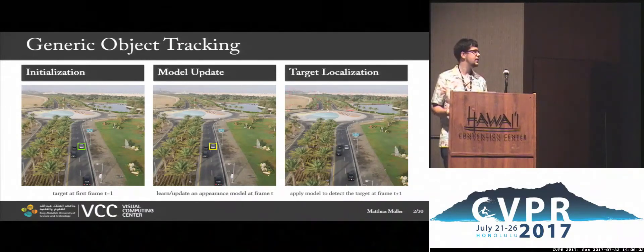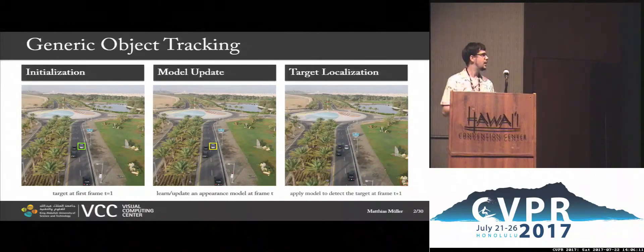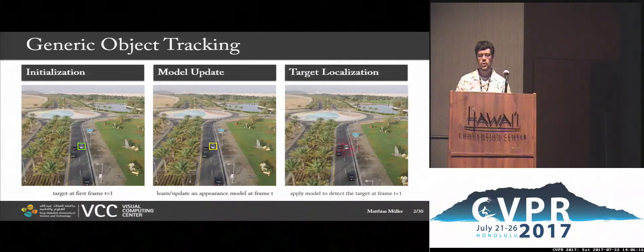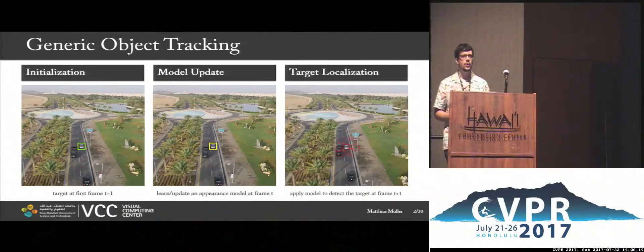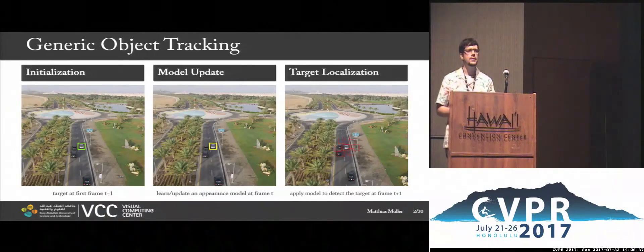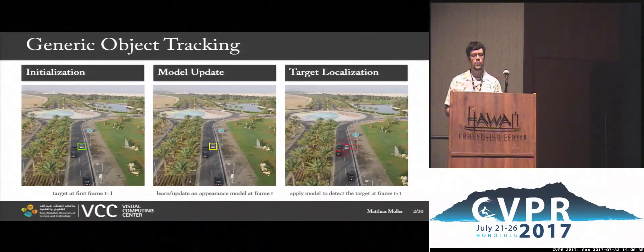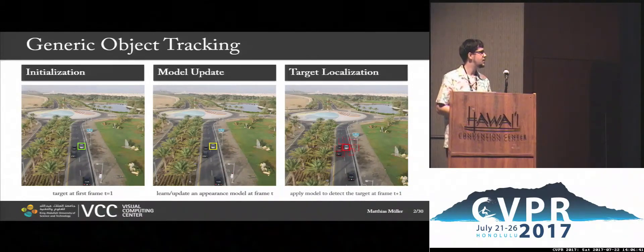The main trick is the search strategy. One approach would be exhaustive search, where we basically have a sliding window go across the whole image. But this is not feasible computationally. A slightly smarter approach is to do some sampling around where the target was last seen. But what often happens is that the boxes sampled don't cover the target fully, and this often causes a drift.